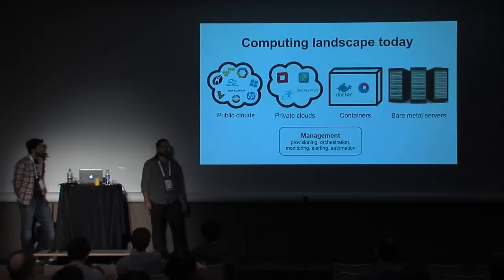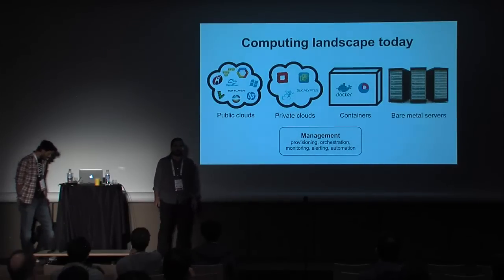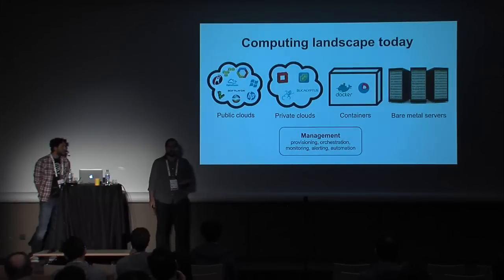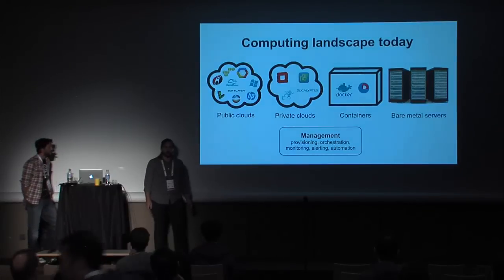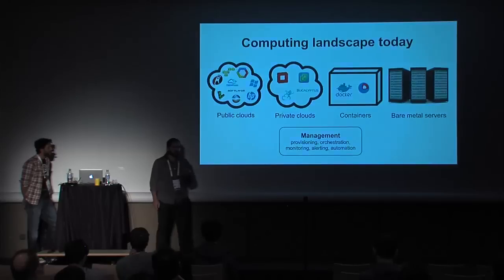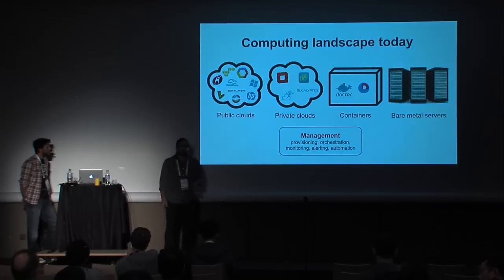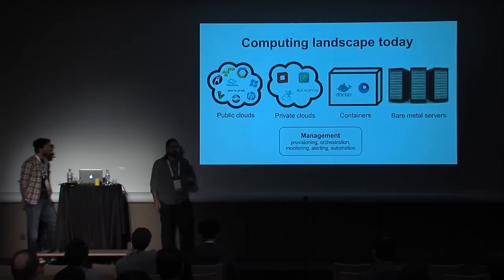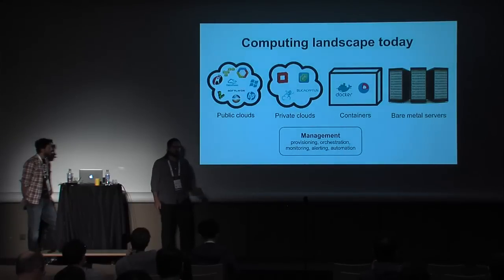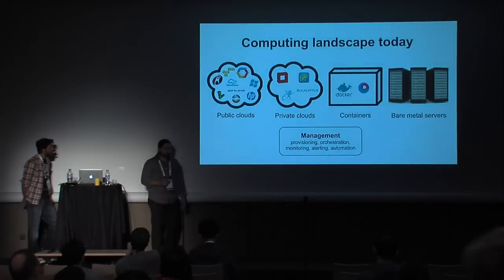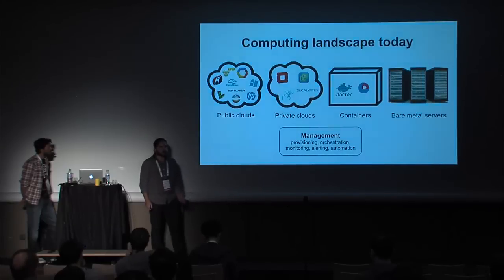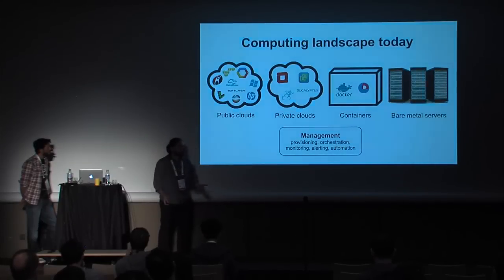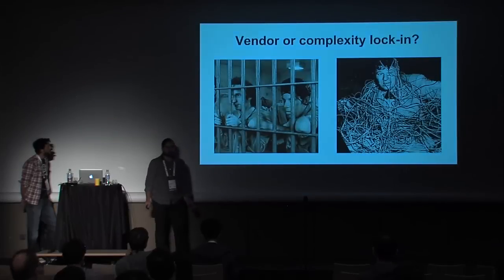All those platforms have pretty much common needs in terms of management. You need to provision new machines, deploy complex applications that consist of several different machines, monitor the applications themselves, the systems and the environment. You need to be notified when those metrics go out of the norm, and in some cases you want to automate some actions when that happens. All those different technologies have pretty much common management needs, but each one comes with its own set of tools — all this power comes with a cost, and we have to use a set of golden handcuffs.